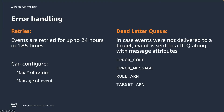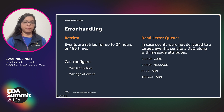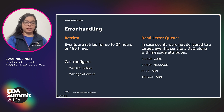EventBridge also handles error handling for you. It retries events for up to 24 hours or 185 times, and you can configure the maximum number of retries or the maximum age of events to be retried. You can also associate a dead letter queue with the event rule and target. Once an event has failed to retry multiple times, it lands in the DLQ, and EventBridge adds message attributes including error code, error message, rule ARN, and target ARN for later reconciliation.